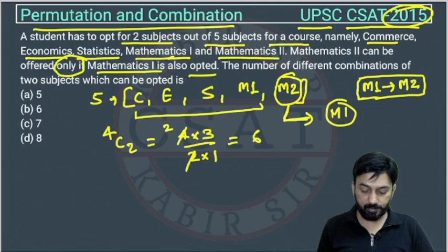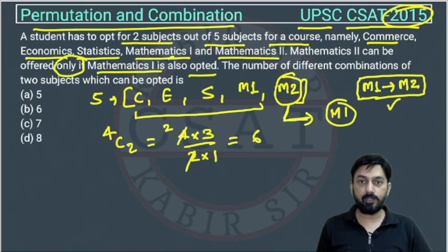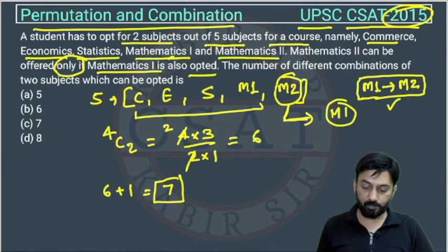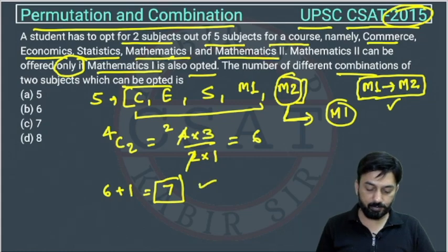So six possibilities are here out of these four subjects and one possibility is from this. Like if he is choosing M2, then he will choose M1 also. So total number of possibilities are six plus one. So the total number of combinations of two subjects which can be opted is seven. So the answer is option C.